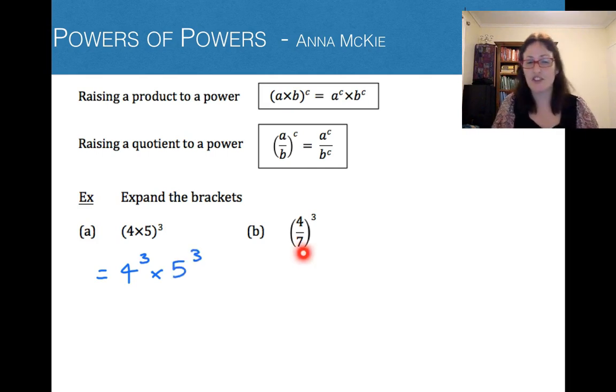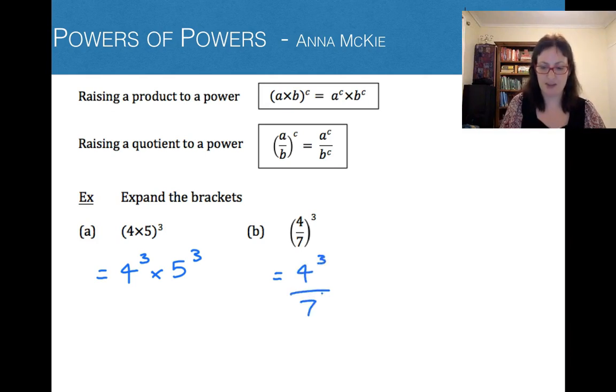Next one: if you think you know what to do, pause the video, give it a go and then come back and check. I'll assume you've done that. So the answer for this one is we have to put that power of 3 with each of the two numbers. So the brackets disappear and we now have 4 to the power of 3 on 7 to the power of 3, and that's all we need to do.